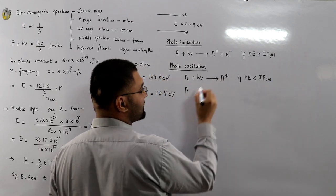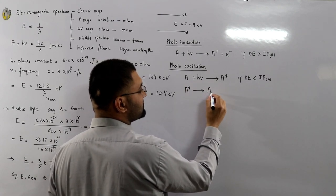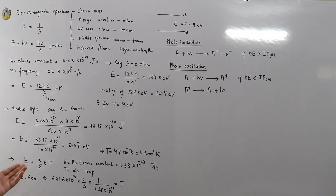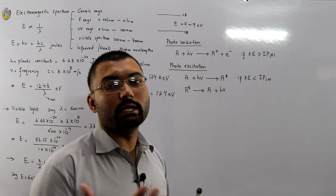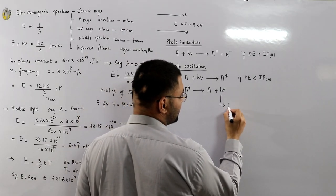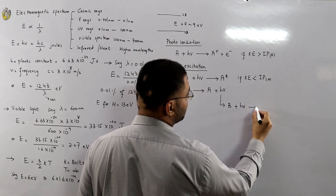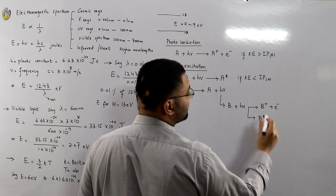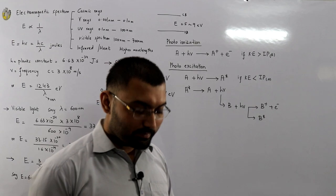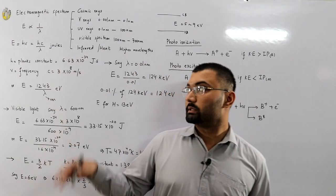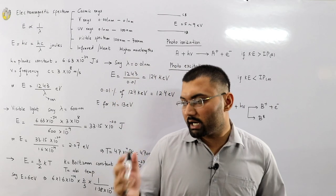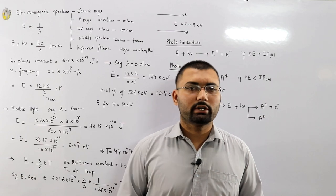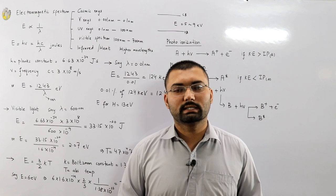In photo excitation, atom A is excited to a higher energy state (denoted A*) — it may jump from one shell to another but does not leave the nucleus's influence. After some time it returns to the ground state, releasing the absorbed energy. A neighboring atom B may absorb this released energy and itself become ionized or excited, depending on its own ionization potential. That concludes today's general discussion on photo ionization. Examples from the book will be covered in the next video.